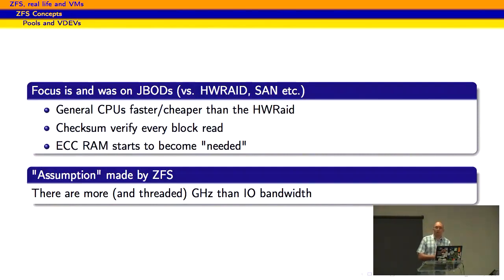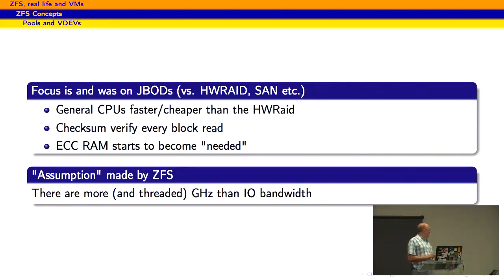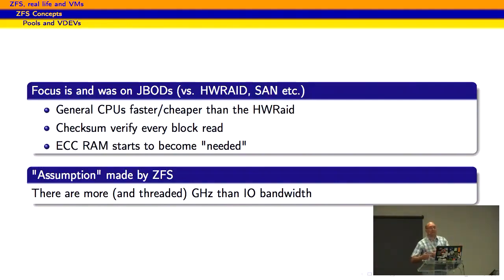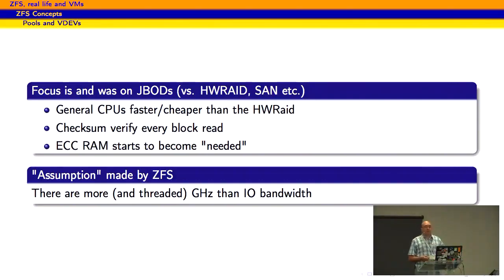ZFS's focus is always on JBODs. It's not meant to run on hardware RAID, it's not meant to run on SANs. It's meant to run on a bunch of disks where you can manage those disks and let ZFS handle that for you. The general assumption is that you have much more CPU available than you can have on a hardware RAID system. A hardware RAID system's biggest problem is that it's expensive, and when you need to move those disks to another system you can't because the hardware RAID controller doesn't work on the newer things. Whereas with ZFS, those disks should be readable by FreeBSD, Linux, as well as Solaris — as long as the pool standards are compatible.